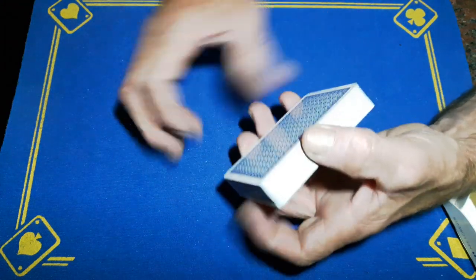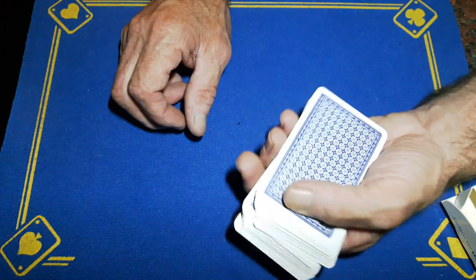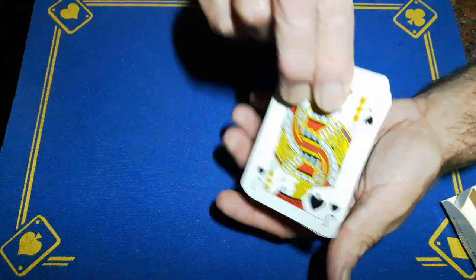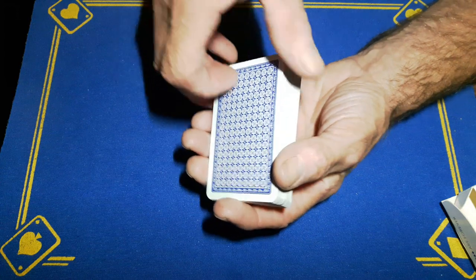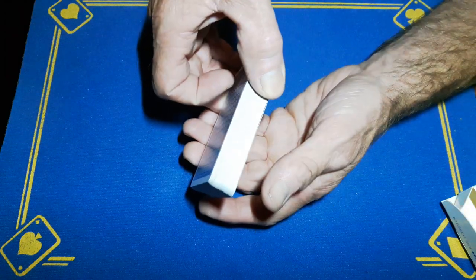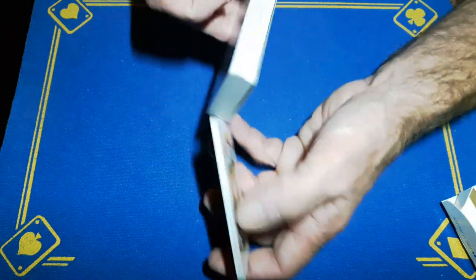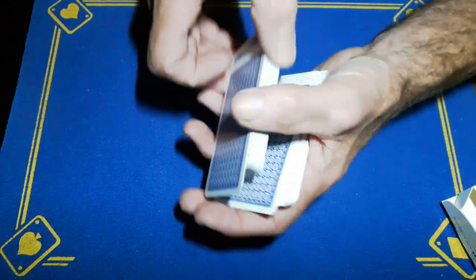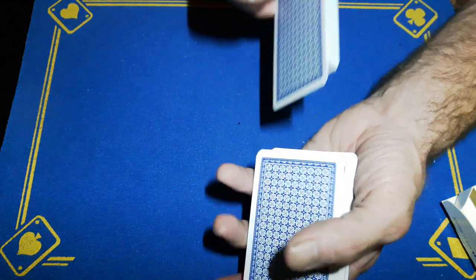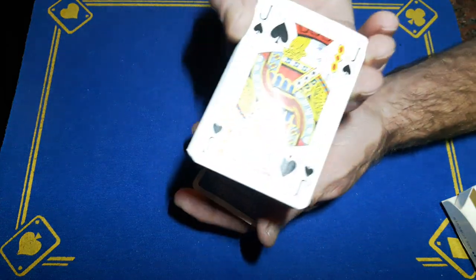You will find your crimp—it's right here—cut the cards at that point, put your crimp card on the bottom. You'll do a simple hindu force by grabbing the bottom of the deck and sliding cards off the top. Get them to call stop whenever they like, and all you're going to do is show them the bottom card.